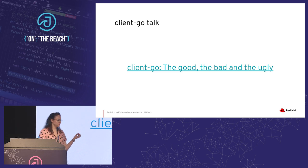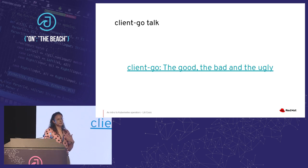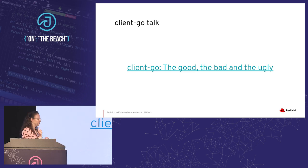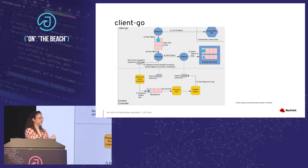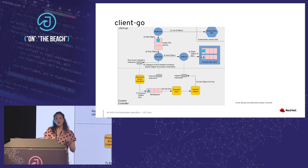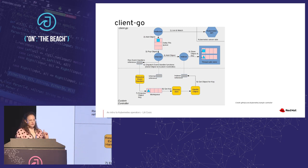I did a talk about client-go itself a couple of years ago at KubeCon — it was called 'The Good, the Bad, and the Ugly' for obvious reasons. There is an overview of what your controller or operator would actually interact with, but we'll focus on the two main components: the informer and the work queue.